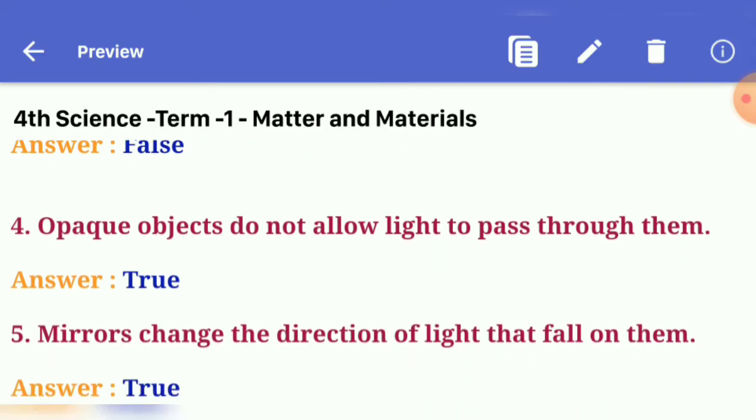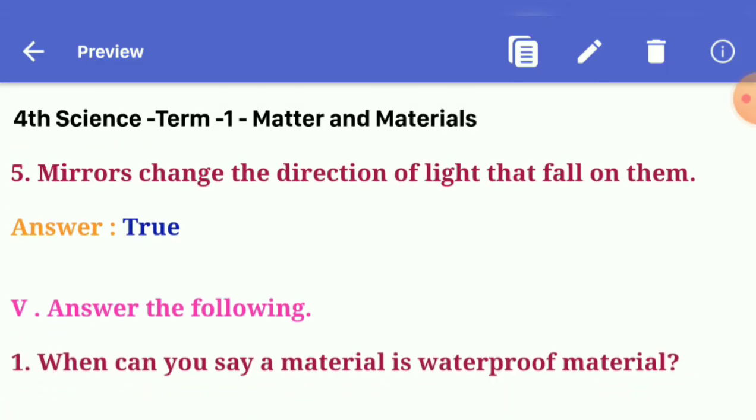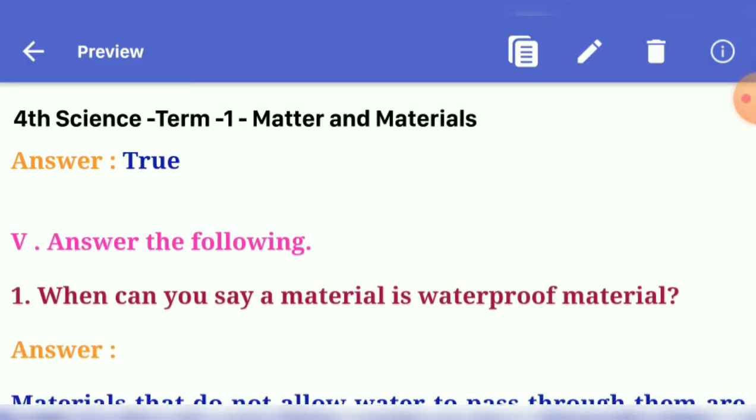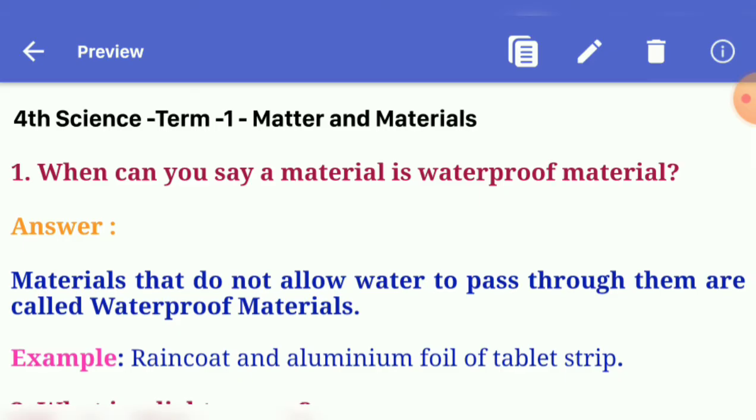Fourth one: opaque objects do not allow light to pass through them. Answer: true. Fifth one: mirrors change the direction of light that fall on them. Answer: true. Next, fifth roman, answer the following. First question: when can you say a material is waterproof material?